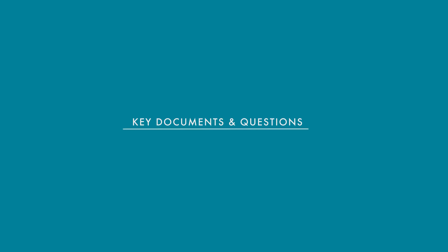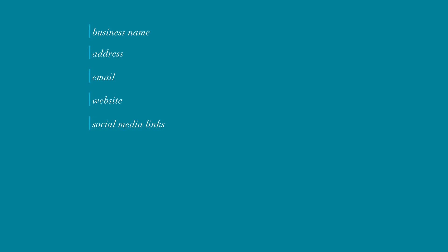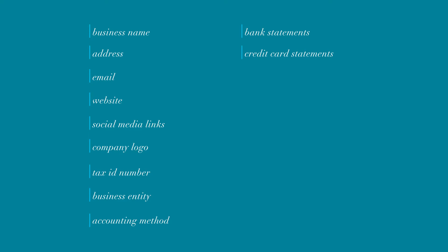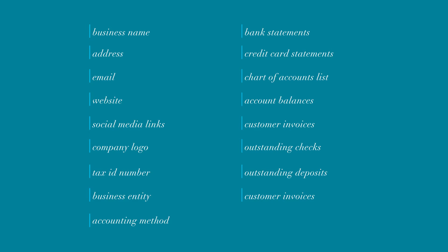Here is a list of key documents and questions you will need to answer as you walk through the Xero setup guide: the business name, address, email address, website, any social media links, company logo, your tax ID number, business entity, your accounting method (cash or accrual), bank statements, credit card statements, your chart of accounts list, account balances, the numbering sequence, and copies or a list of all outstanding checks, outstanding deposits, open customer invoices, and unpaid bills.